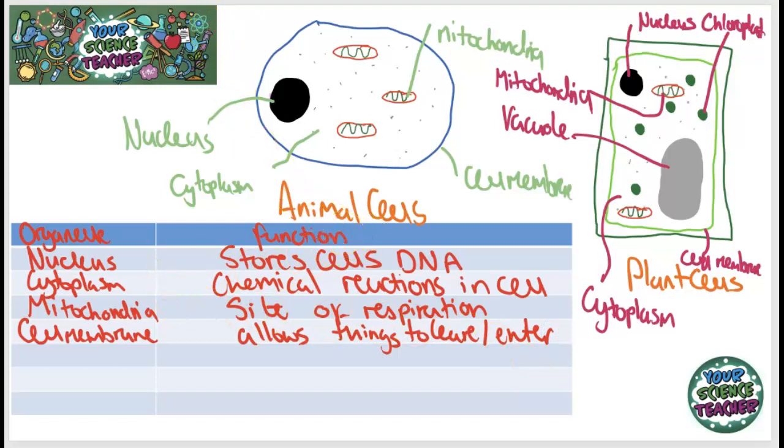Now, we're going to look at some of the organelles that are found just in plant cells. We have our vacuole. The vacuole is what can store the products of photosynthesis. It usually contains sap. And it also makes the plant cell a bit more rigid. We also have the chloroplast. And the chloroplast is perhaps the most important difference, because this is how plants make their own food. It's the site of photosynthesis.